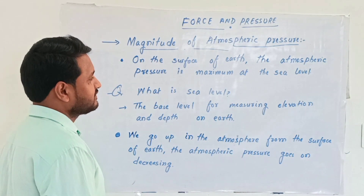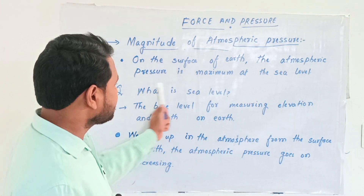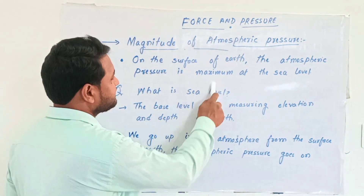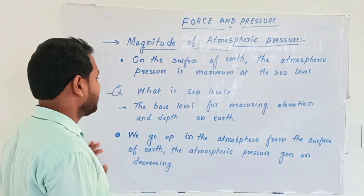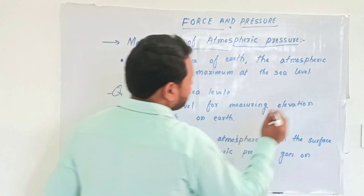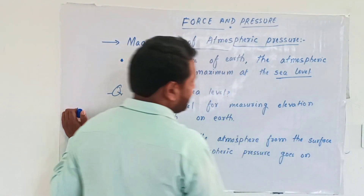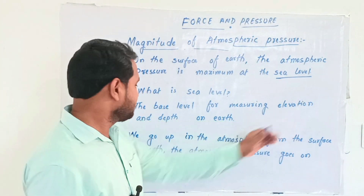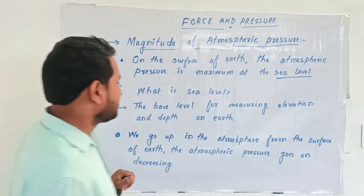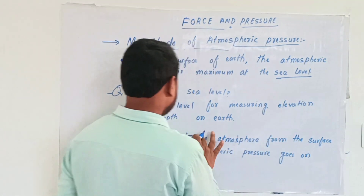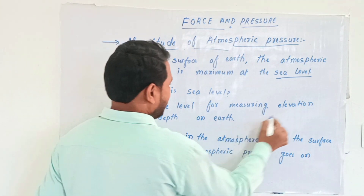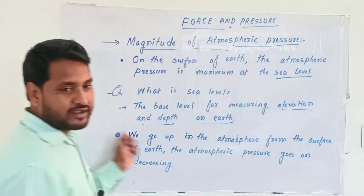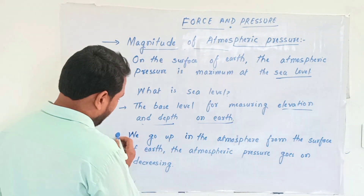On the surface of earth, atmospheric pressure is maximum at the sea level. What is sea level? The base level for measuring elevation and depth on earth — we are measuring the elevation and depth on earth. This is what we call sea level.